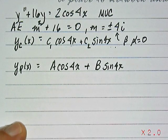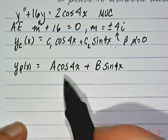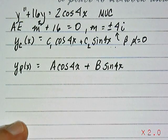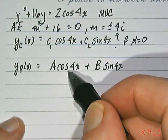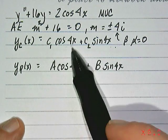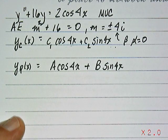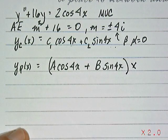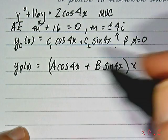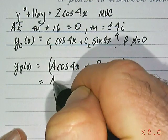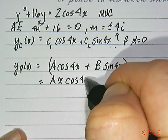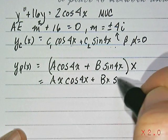But remember, you always need to double check to make sure that if any components of the particular solution are found in the complementary solution, you need to remove that duplication. So in this particular case, we can see that we've duplicated both the cosine and the sine 4x terms in the complementary. So in that case, we need to multiply our particular solution by x to see if that will remove the duplication. And so in this particular case, we'd have A x cosine of 4x plus B x sine of 4x.